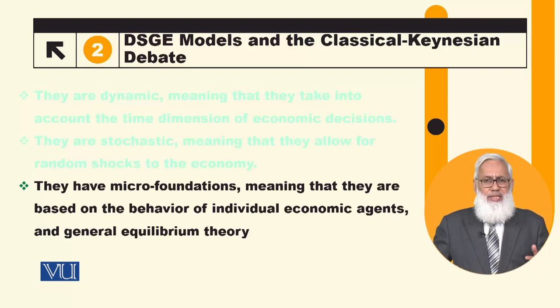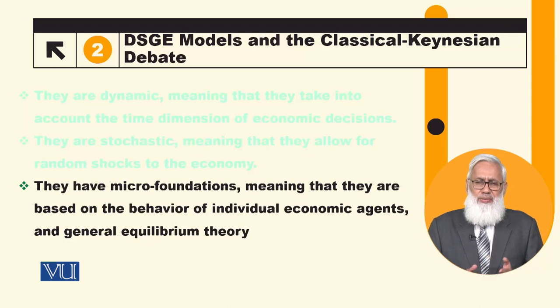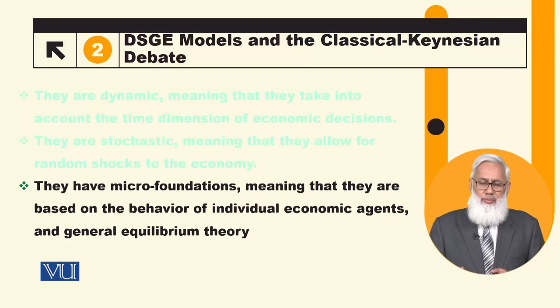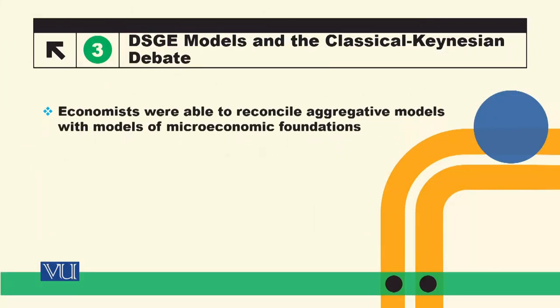The general equilibrium theory allows economists to reconcile aggregative models with microeconomic models. We are talking about aggregate output and aggregate consumption, but we are building it from microeconomics. Usually we talk about a representative household term.